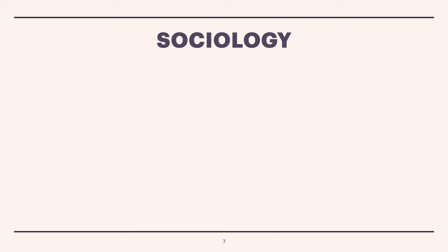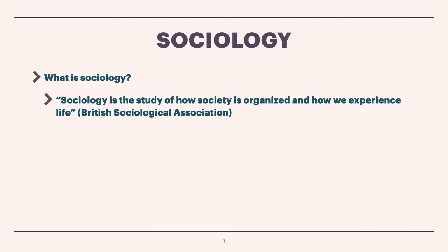Now, let us get back to this question again. What is sociology? We can say that sociology is the study of how society is organized and how we experience life. It gives you a more concrete sense of what sociology is compared to the earlier definition. This is the definition given by the British Sociological Association. And in this idea, there are two very important ideas about sociology that I would like to introduce now.